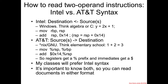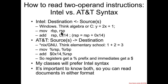Before we get to the next instruction, we need to talk about how Intel versus AT&T syntax handle two-operand instructions. In Intel syntax, two-operand instructions have the source on the right and the destination on the left — Windows typically uses Intel assembly, while Unix-like systems tend to use AT&T syntax. You can think of it like C programming or algebra, where a value goes into the thing on the left. So in Intel syntax, MOV RSP, RBP takes the value in RSP and puts it into RBP.